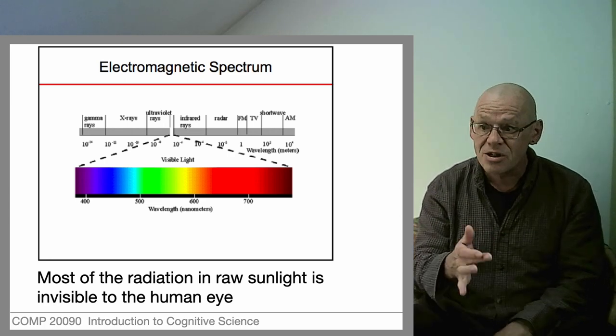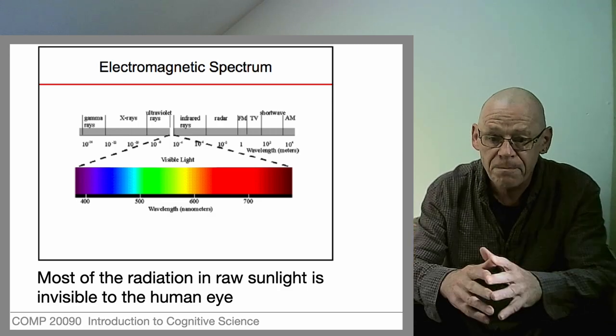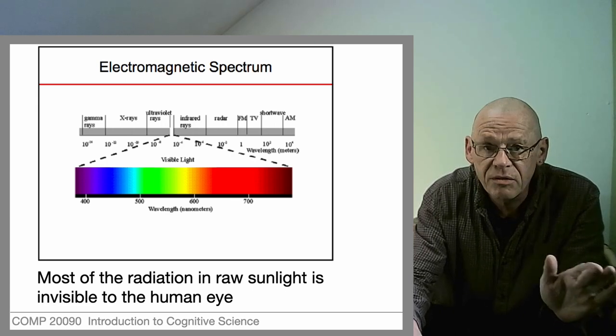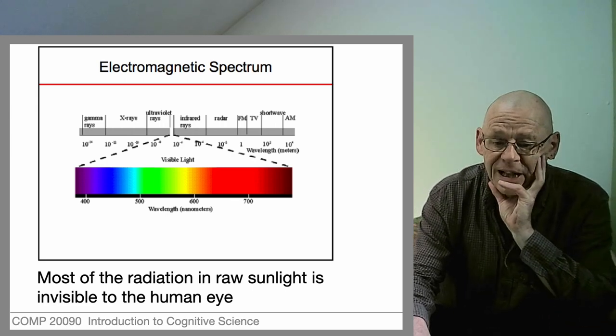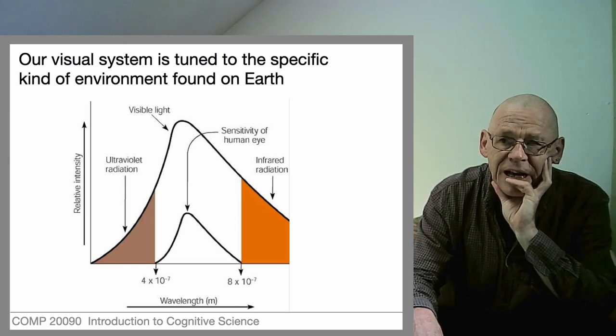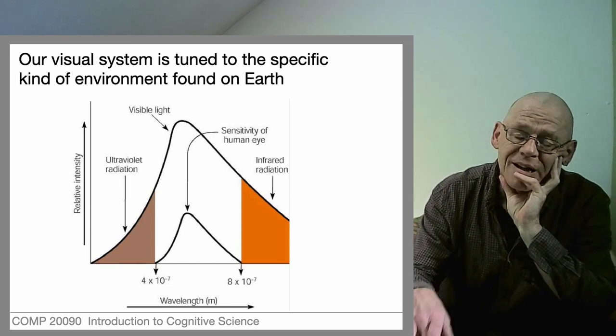If there were no human eyes, there'd be no point in saying this part of the spectrum is special. But of course, the eye evolved, and it evolved in a particular place called planet Earth. If we have a look at the electromagnetic energy given off by our Sun, it has a certain profile.